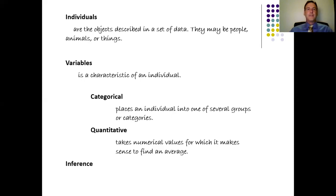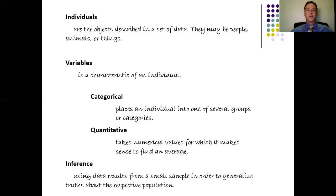And if we can come up with some conclusions about that small sample, then sometimes we're allowed to generalize those ideas to our bigger group, which is our population. And that's what statistics is all about. We take small groups of the individuals, we come up with some conclusions about those individuals within our small sample, and then we generalize to our population. And that's what inference is all about. Using data from a small sample in order to generalize truths about our respective population.